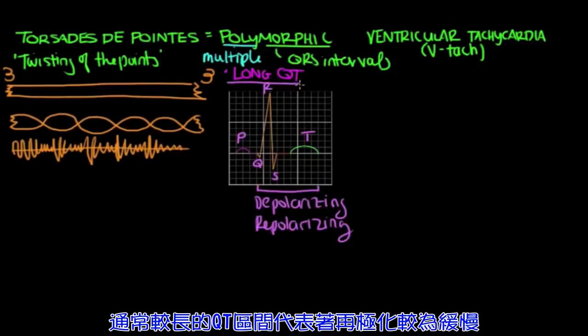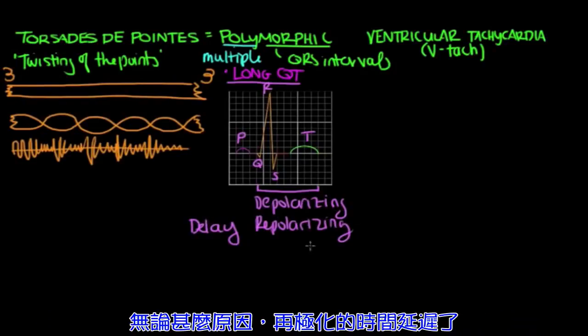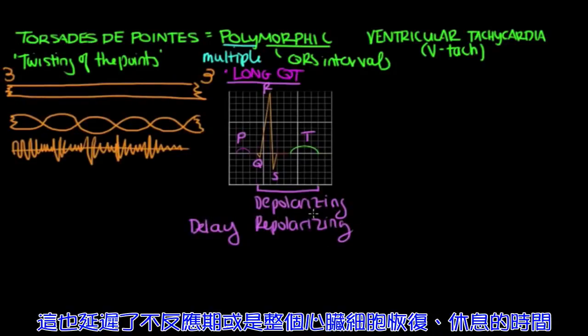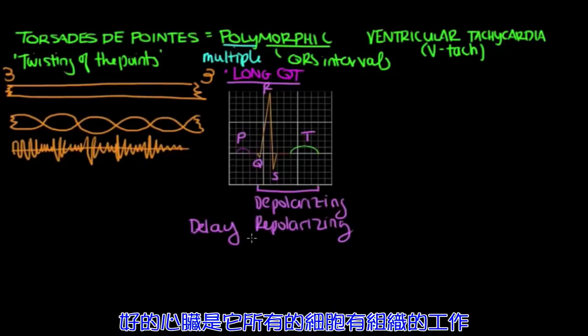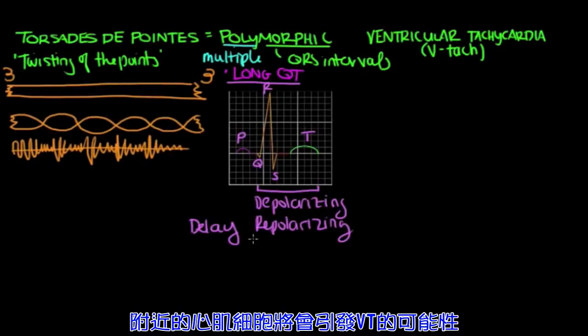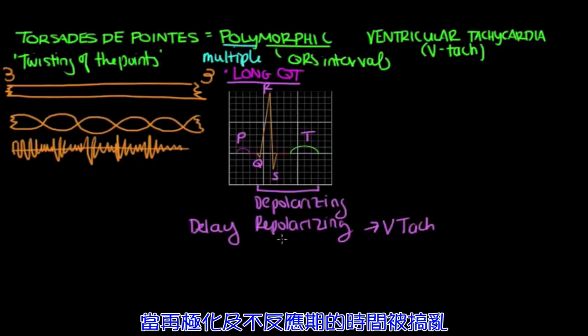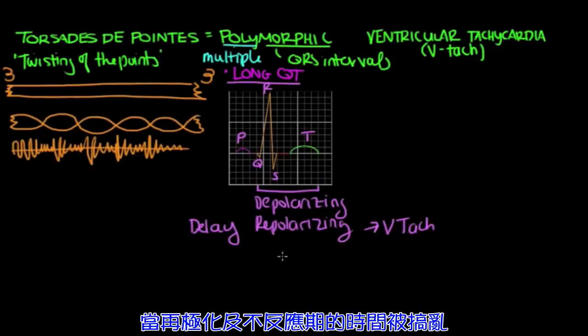Now people with a long QT typically have some sort of delay in repolarization. And this delay could be due to either genetic mutations and ion channels or from certain medications. But for whatever reason, they have a delay in repolarization. And that delay affects the refractory periods or the recovery times of heart cells. Now the heart likes it when its cells work in unison. So if there are differences in refractory times in neighboring heart cells, that can set you up to have a ventricular tachycardia, because you're messing with the conduction system when you're messing with the repolarization and the refractory periods.